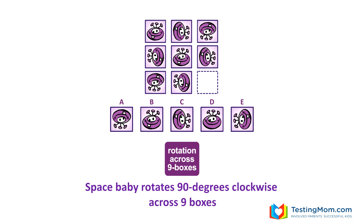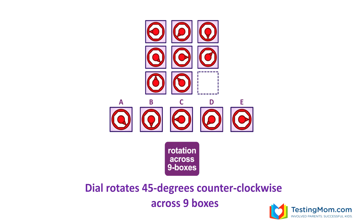The next rule to look for is a rotation across nine boxes. Here the little figure is rotating 90 degrees clockwise across nine boxes. If you watched our lesson on analogies, you'll remember rotations — they also show up here and you want your child to be able to recognize them. Here D is the answer. Here's another example of a rotation across nine boxes. The outer figure is the same throughout, but there's an inner dial that rotates counterclockwise about 45 degrees across nine boxes. C is the answer.